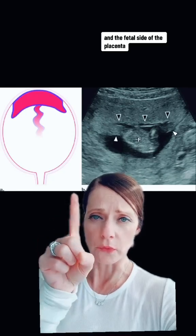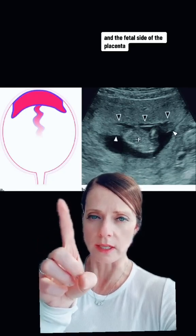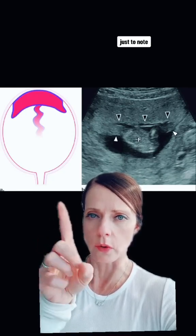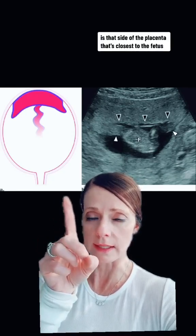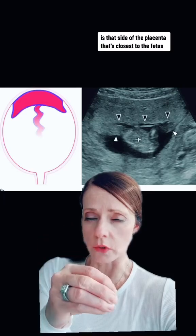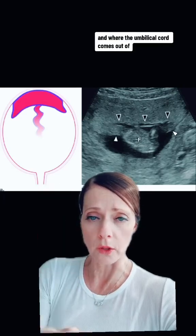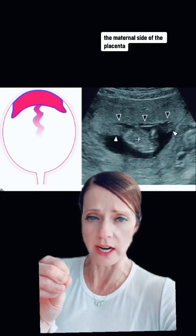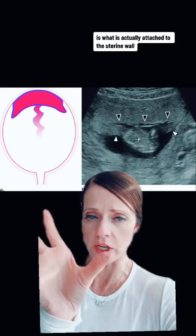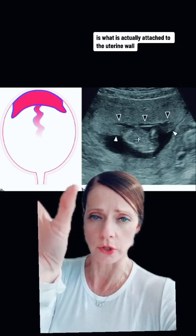The fetal side of the placenta — just to note — is that side of the placenta that's closest to the fetus and where the umbilical cord comes out of. The maternal side of the placenta is what is actually attached to the uterine wall.